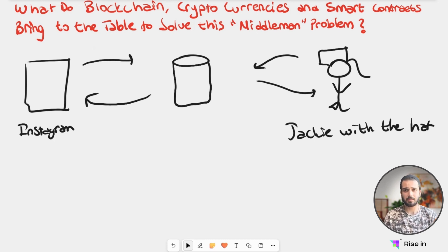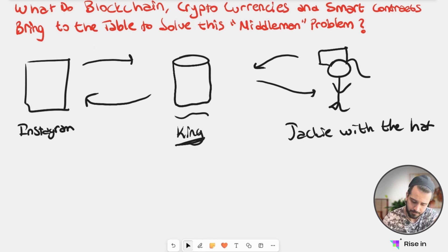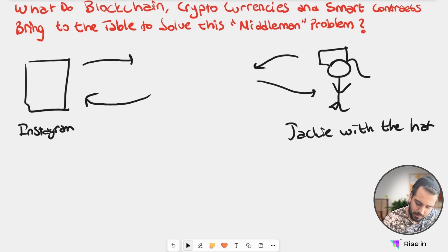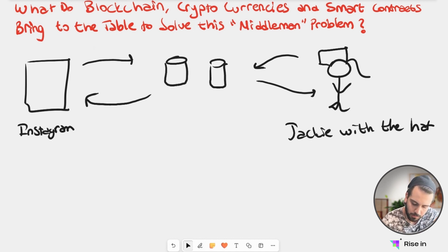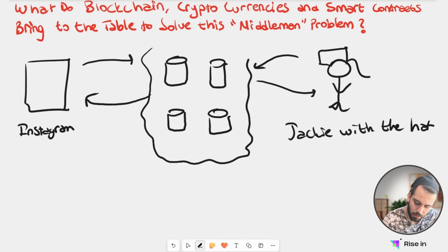But we said that that was problematic for many reasons — like we were giving too much data and we couldn't control the consequences of the situation. So here, instead of this structure — and you can think of this as the king in this structure, because we are working with a single entity — what blockchain brings to the table is that we have decentralized servers. So instead of having one server, here we have a couple of servers. You can think of this structure like a board of servers, and we have actually many more.